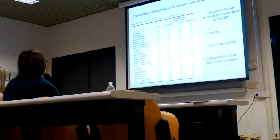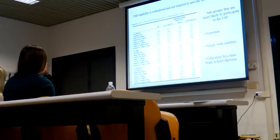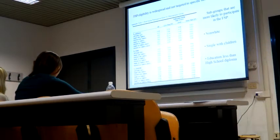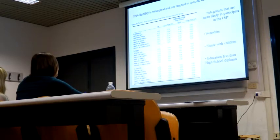The results on this basic model say that there are certain subgroups which are more likely to participate in the food stamp program: non-white people, families with single parents with children, and families where the household head has an education less than a high school diploma.